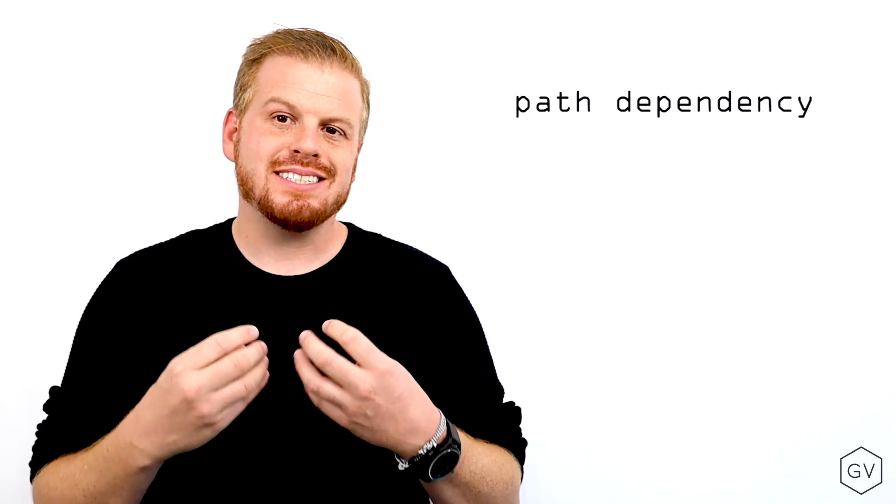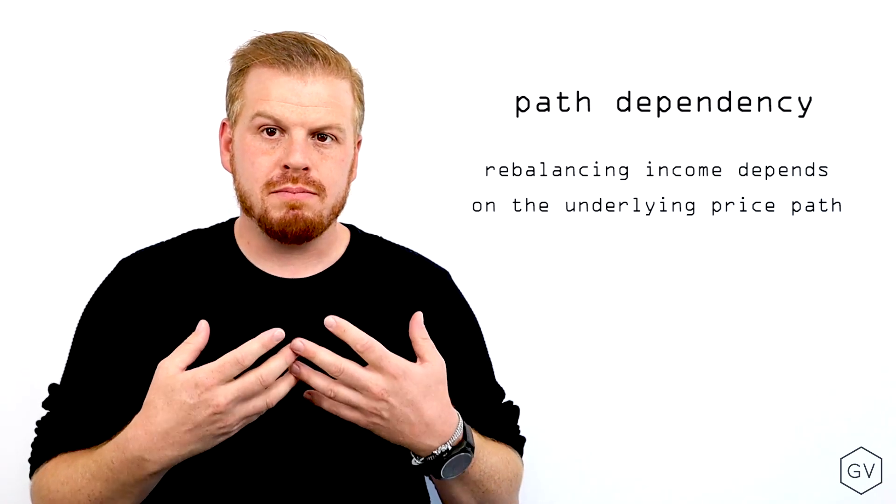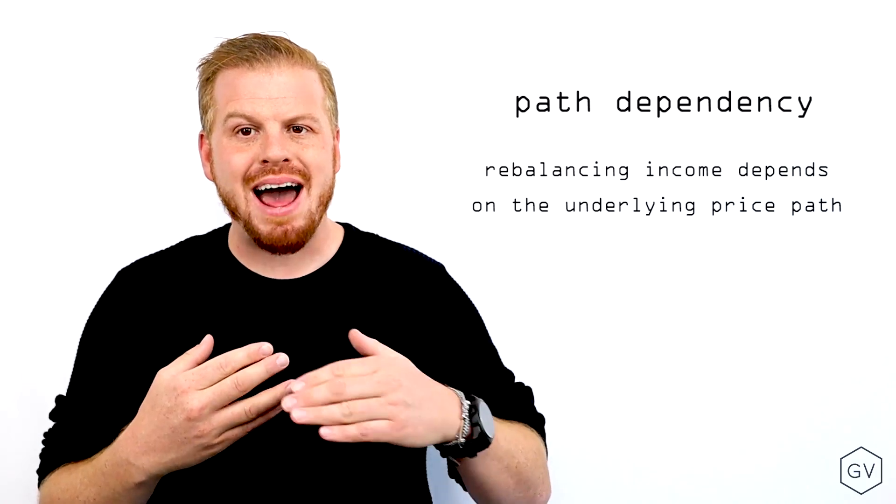Gamma is essentially highest at the money near expiration. So we come across this concept known as path dependency. Path dependency essentially says the amount of gamma scalping rebalancing income that you will generate depends on the path of the underlying.